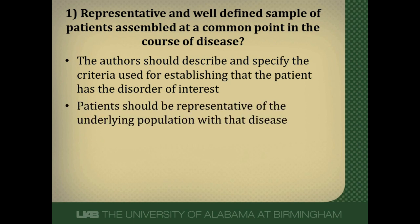The patients in the study should be representative of the underlying population with that disease — they should be like everybody else who has this disease; there shouldn't be something special about them. One thing to watch out for is referral bias: patients assembled from an academic tertiary medical center. The problem is that people refer very unusual, severe cases to those places, so those patients are not representative of everybody else with the disease. It should be a very broad group of patients.